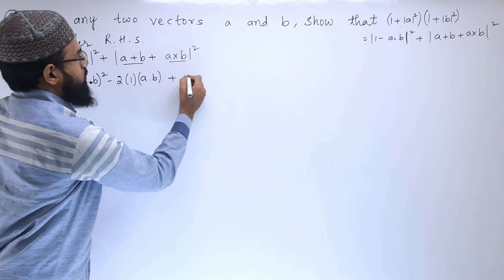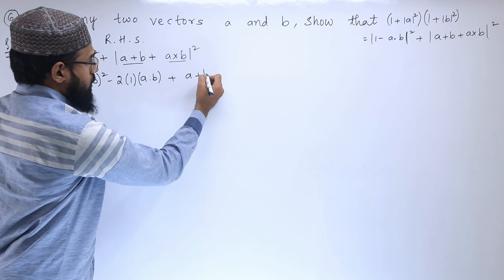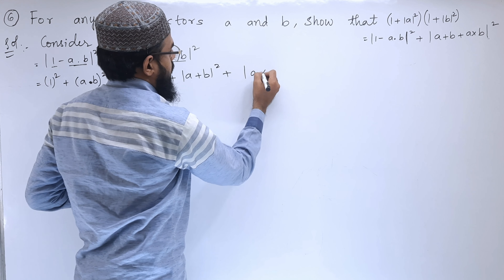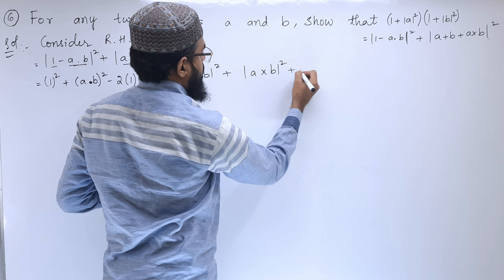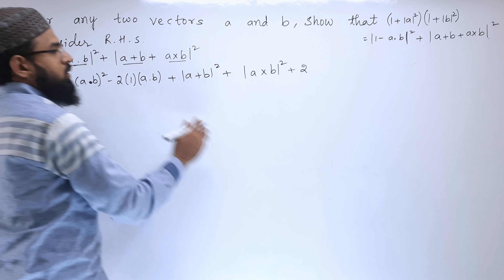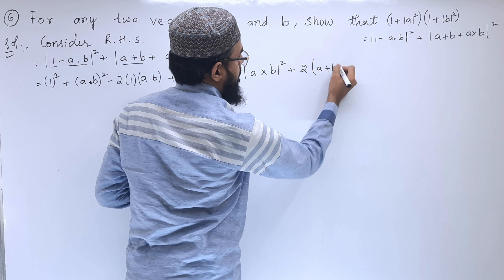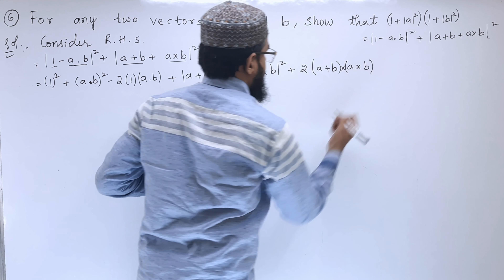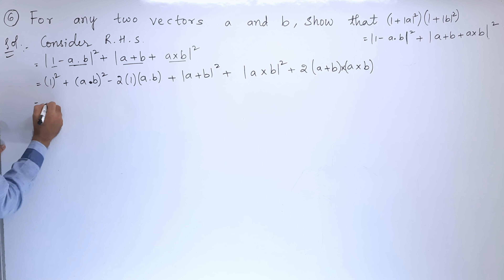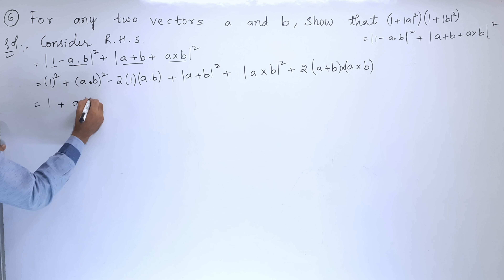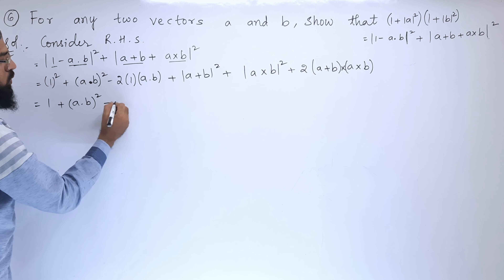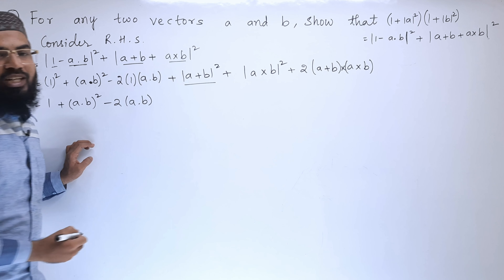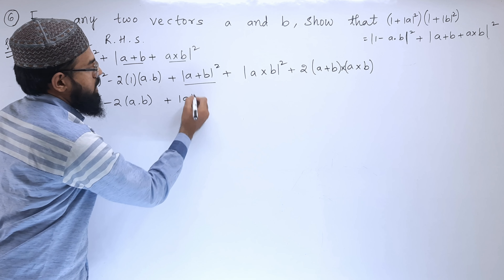RHS = |1 - a·b|² + |a + b + a×b|². Expanding |1 - a·b|² using the (a - b)² formula, where a is 1 and b is a·b: we get 1² + (a·b)² - 2(1)(a·b), which gives 1 + (a·b)² - 2(a·b). Then for the second term, we expand |a + b + a×b|².